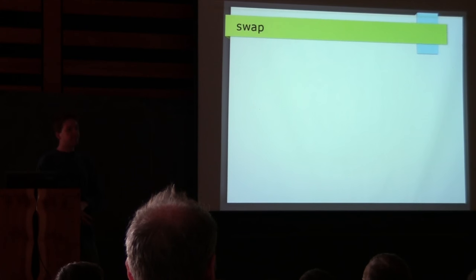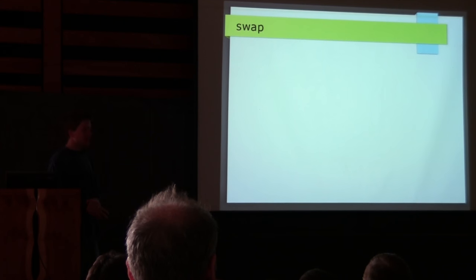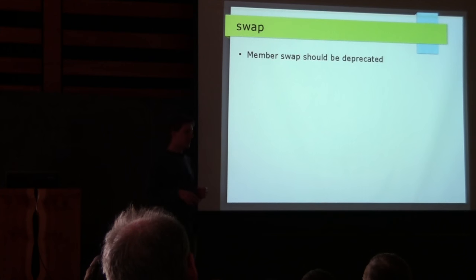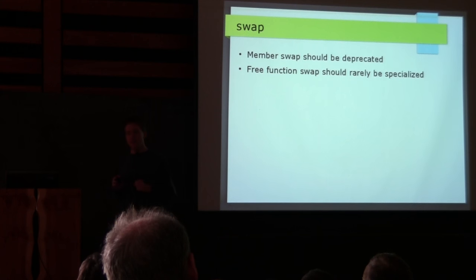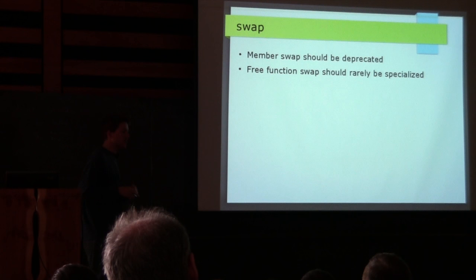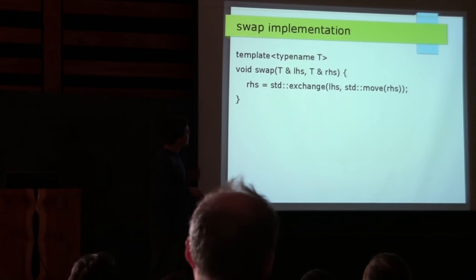Now, swap — this is maybe one of my more contentious slides. I think member swap should be deprecated. std::vector and all other standard containers have a member function swap that takes a single argument. There's an overload of std::swap that calls that member swap function. My further argument is that the free function swap should rarely be specialized, and in the case of vector, it does not need to be.